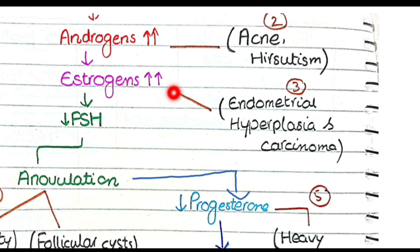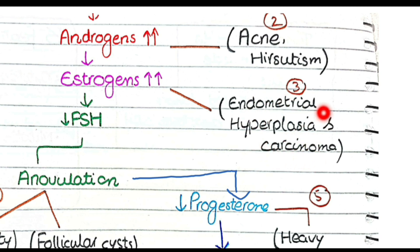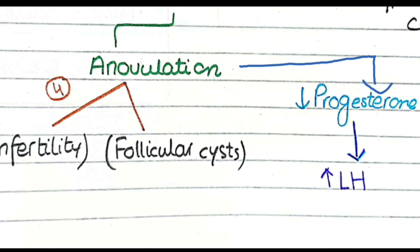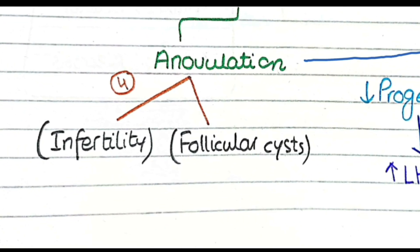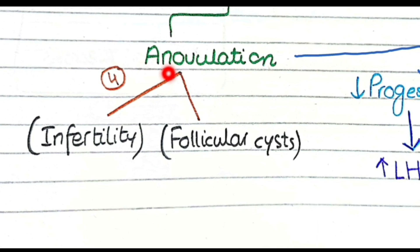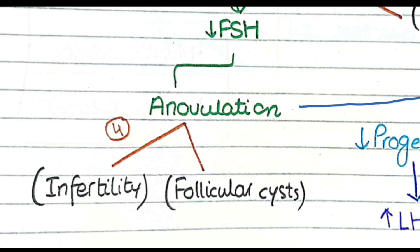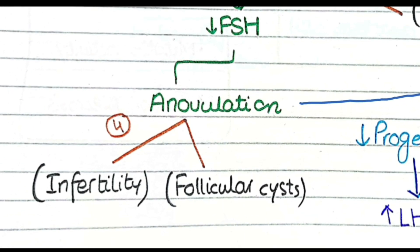Because increased androgens are converted by the aromatase enzyme into estrogens, the increased estrogen level causes endometrial hyperplasia. This endometrial hyperplasia can progress to endometrial carcinoma, so uterine carcinomas are more likely in patients of polycystic ovarian syndrome.